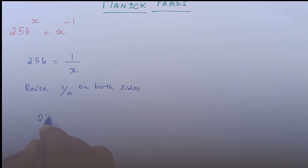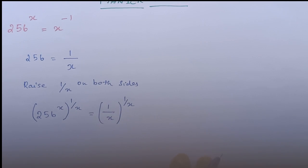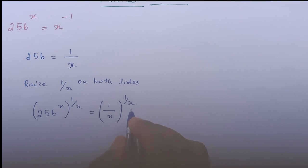So 256 to the power x, raised to the power 1 by x, equals 1 by x raised to the power 1 upon x. This simplifies as x will get cancelled.